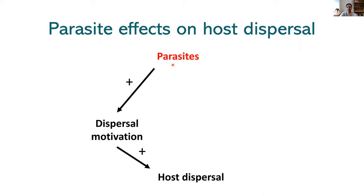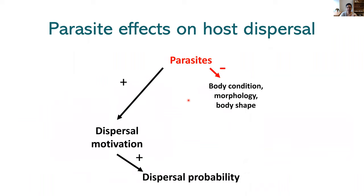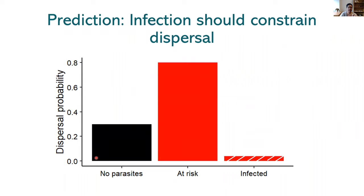But parasites also have another potential impact — they might influence phenotype in ways that affect dispersal ability. Parasites could influence body condition, morphology, body shape, and the condition of dispersal structures. Our prediction is that while backswimmers that are not infected but perceive risk of infection will have higher dispersal, hosts that are actually infected will have lower dispersal ability — their dispersal will actually be constrained.